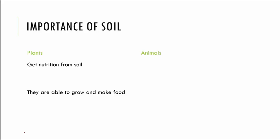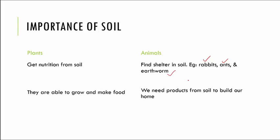Now if you see animals, they find shelter in soil. Examples of animals that live in soil include rabbits, ants, and earthworms. Apart from this, we also get products required for building a house from the soil — like sand and bricks — all of which come from the earth. So you can see how important soil is.